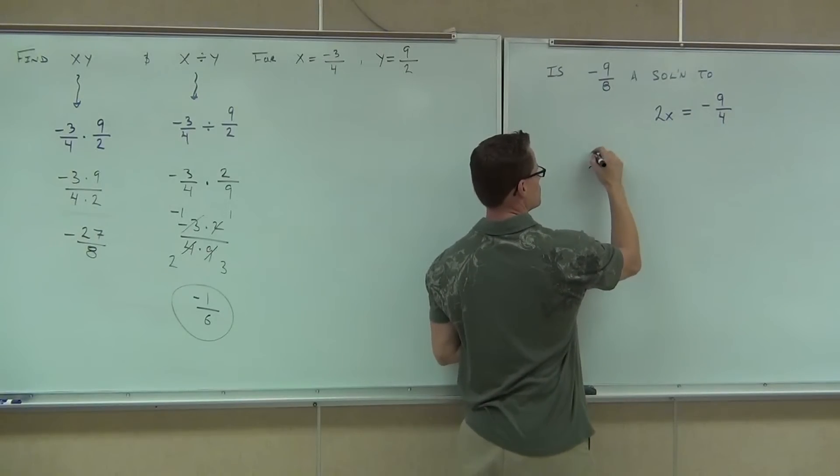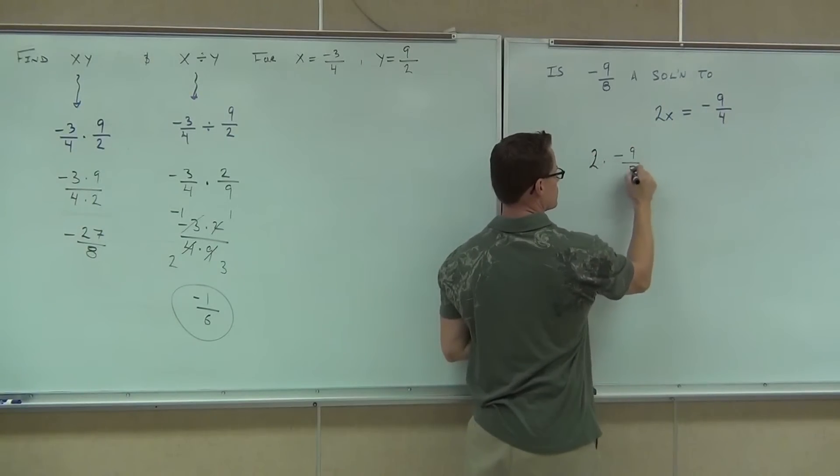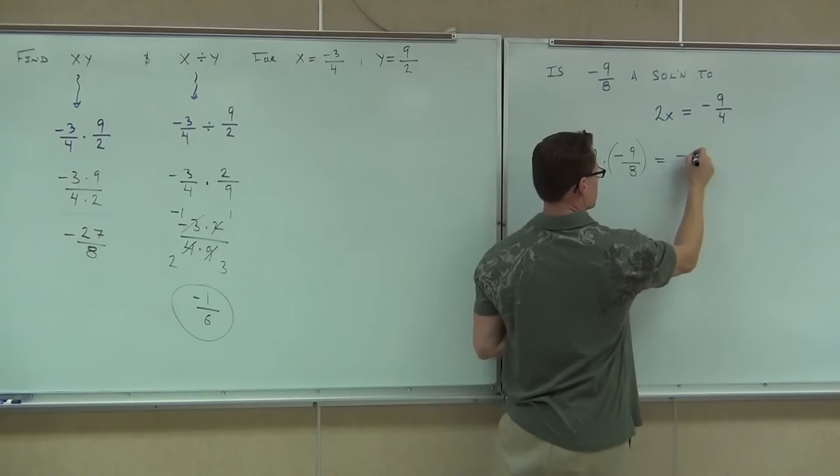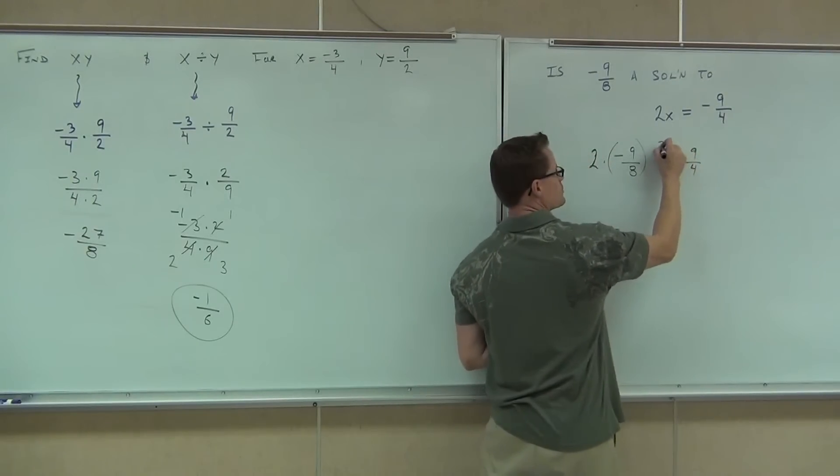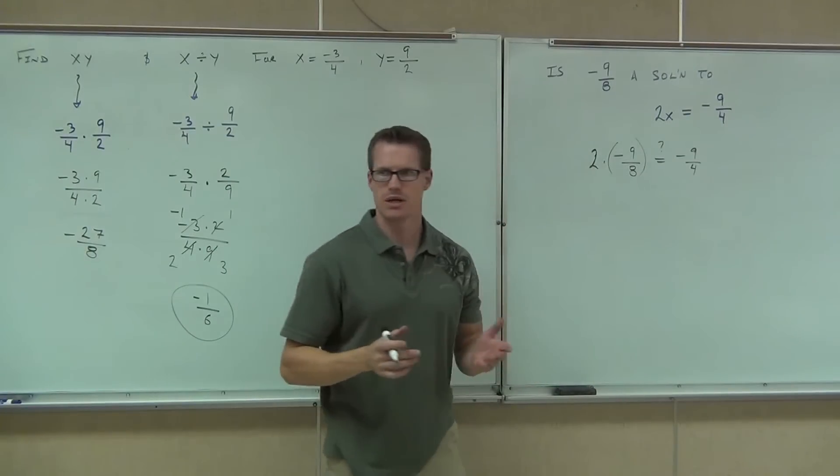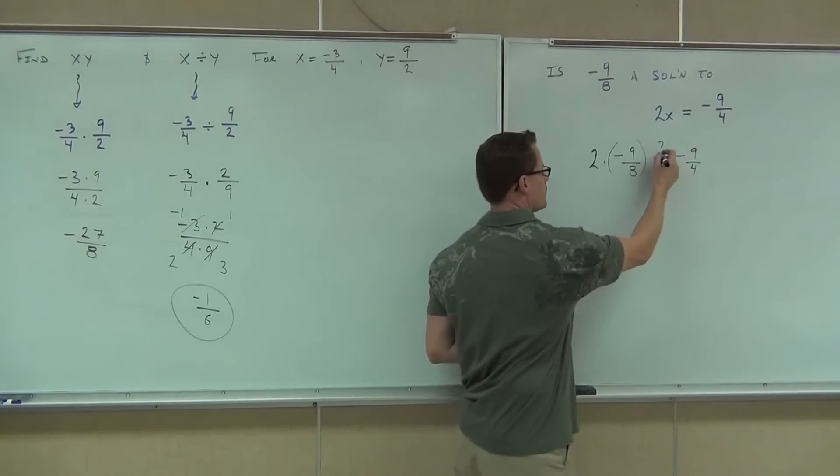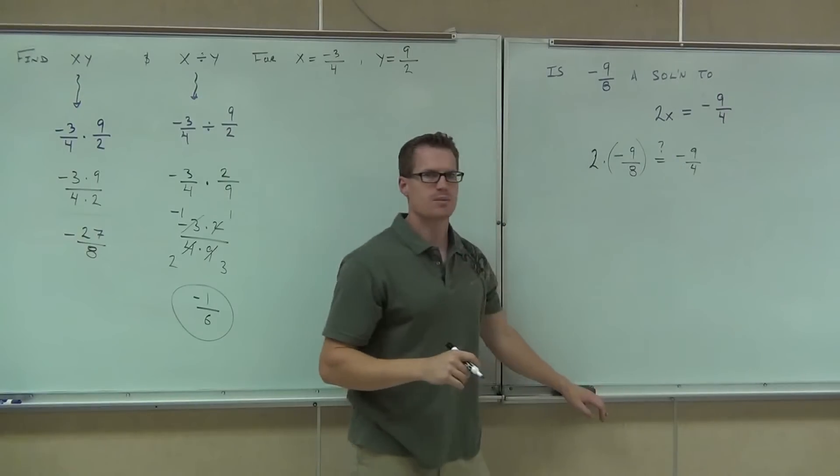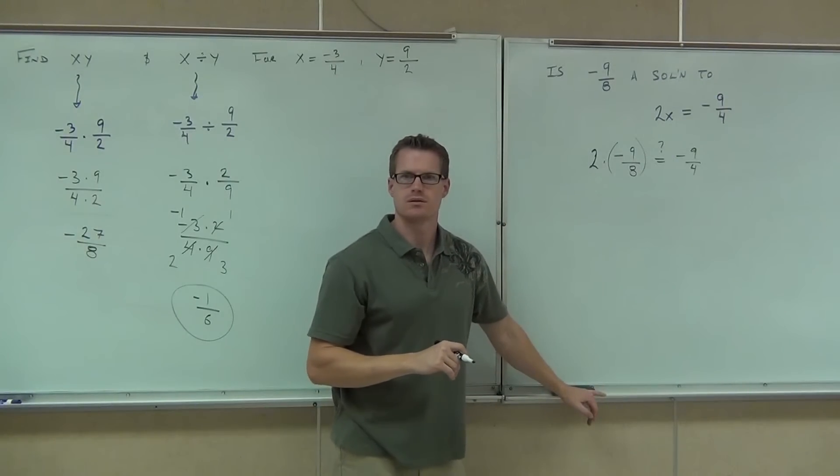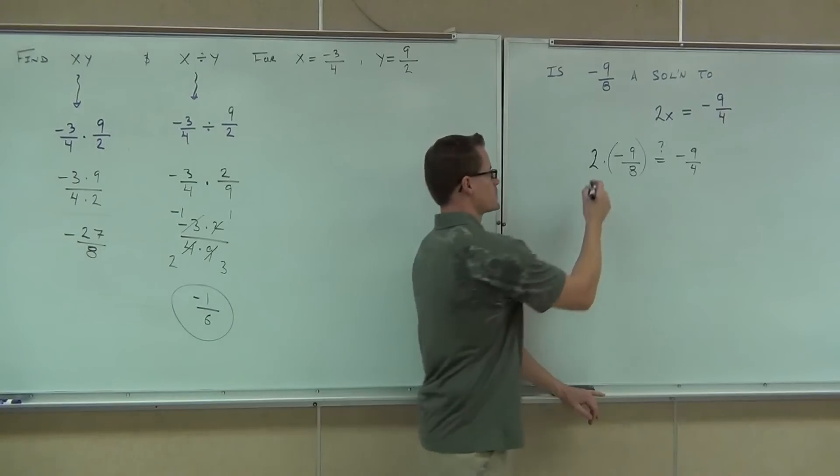Good, so 2 times negative 9/8. I'm going to put a little question mark here saying, we don't know if that's equal yet, we've got to do some work on it. How do I do 2 times negative 9/8? Okay, so we've got to change it to a fraction first.